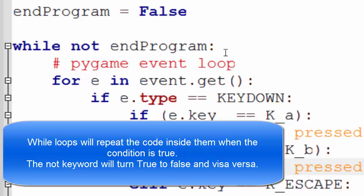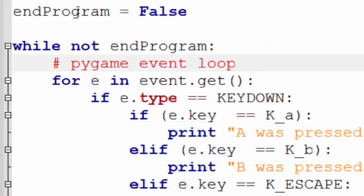Just as a little side point, while loops will always repeat if the condition, the bit after the while loop is true. Ergo, because end program is false and I'm knotting it or inverting it, that's why this loop will keep going.